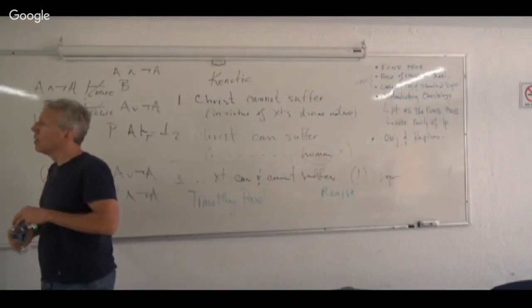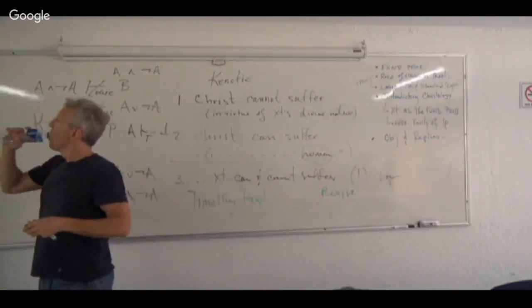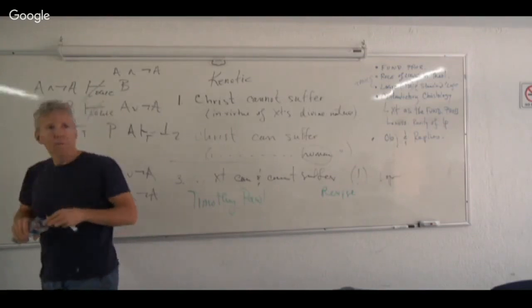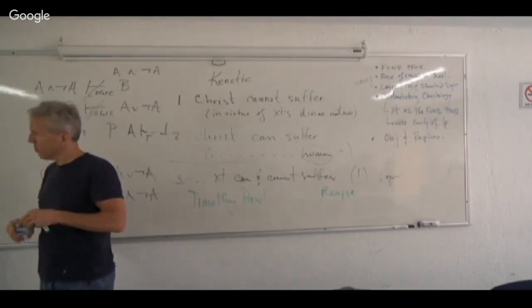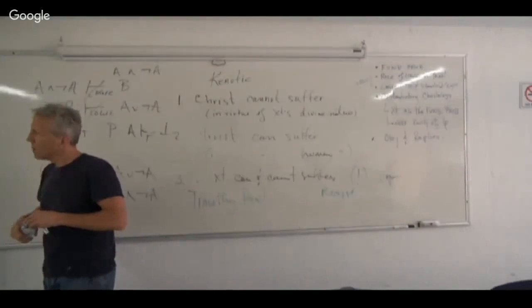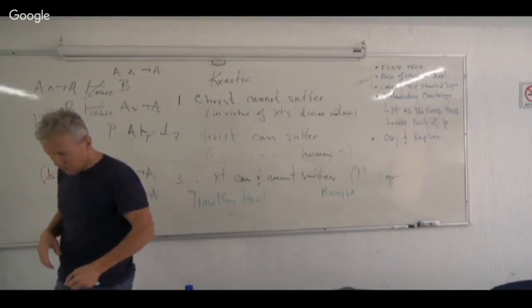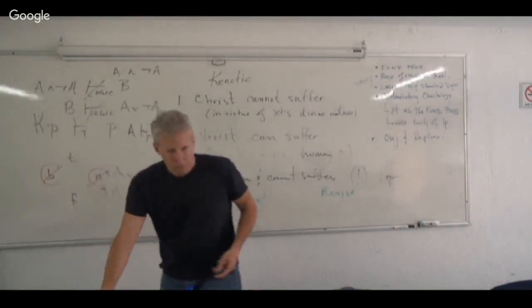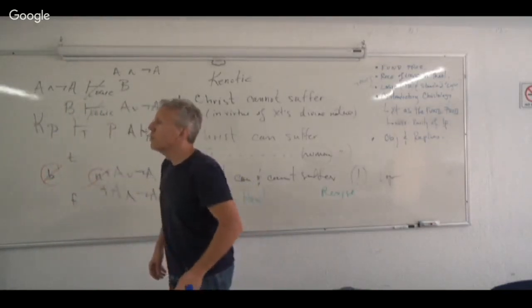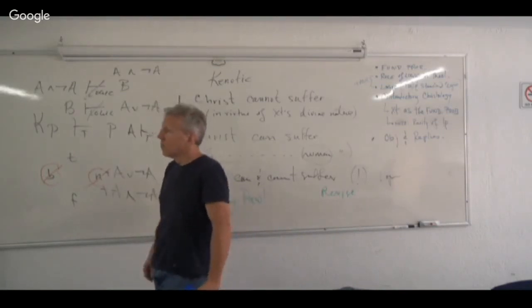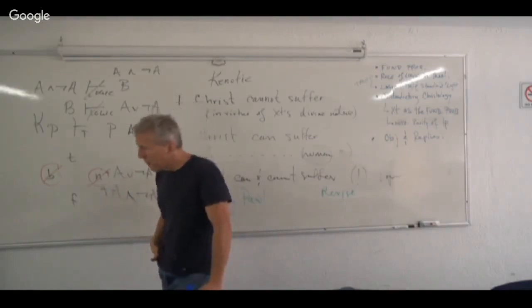My question is actually very similar to the previous one. So you've been talking about divine nature and human nature, especially toward the end of your talk about one person, two natures, as if divinity is a nature possessed by this guy called Christ, and humanity is also a nature which might or might not be possessed by this guy called Christ.